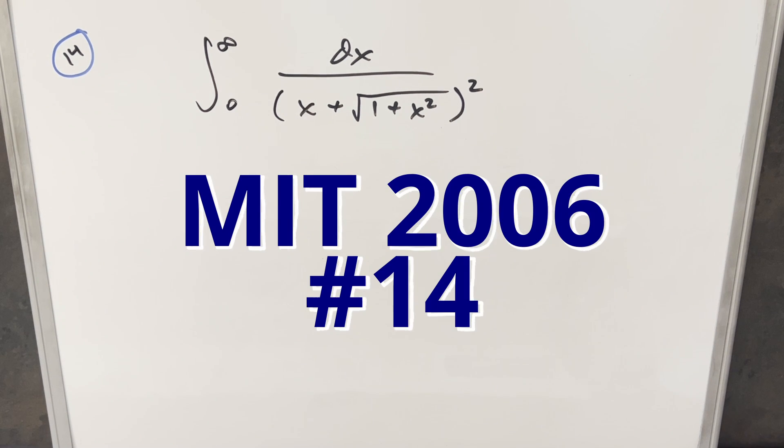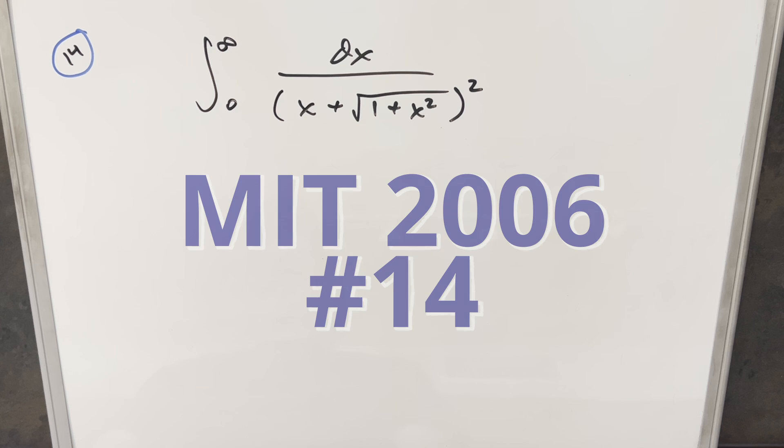Okay, we have an interesting integral. This one's from the MIT integration B2006, problem 14. We have the integral from 0 to infinity of 1 over x plus square root 1 plus x squared all squared dx.